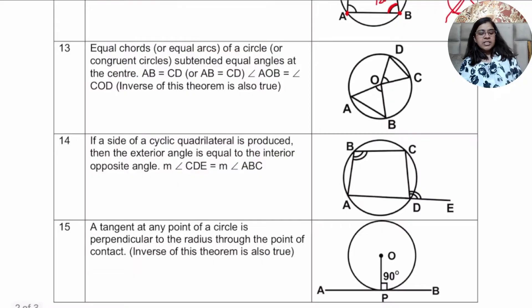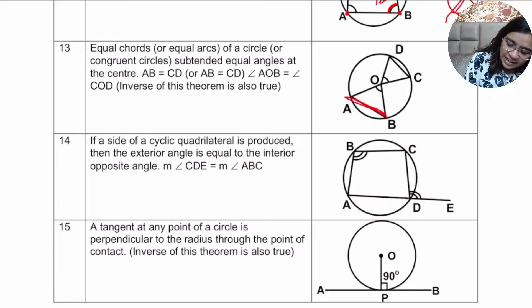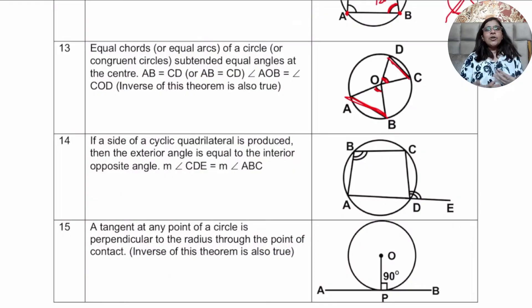Moving next, we have the 13th one, which is the equal chords. This is something we have already done, I believe. But this is just its inverse. Earlier we said that if both chord lengths are same, then they subtend the same angles at the center. But the inverse theorem is this, that if you are given that this is also 60 degree and this is also 60 degree, then it automatically means that the length of the two chords AB and DC will also be same.